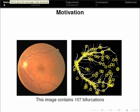The figure on the right shows the ground truth of all vascular bifurcations in this retina image which consists of 107 bifurcations.